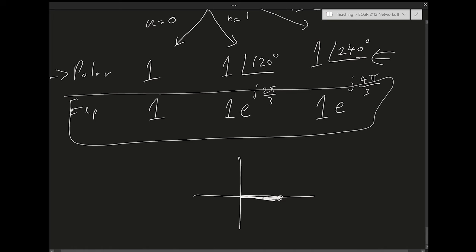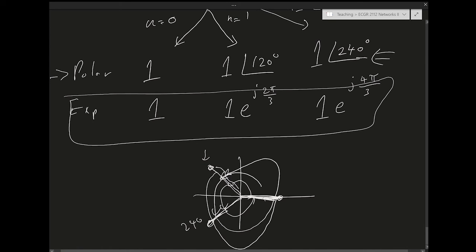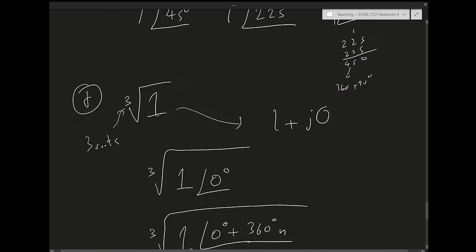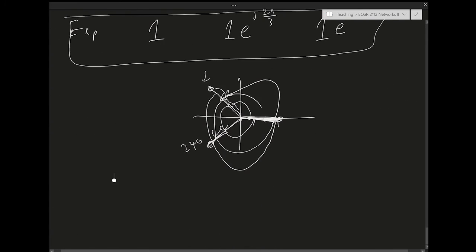Verifying: multiplying 1∠120° by itself three times goes 120° → 240° → 360° = 0°, back to 1. Similarly 1∠240° three times: 240° → 480° → 720° = 0°, back to 1. These are the three cubic roots of unity.